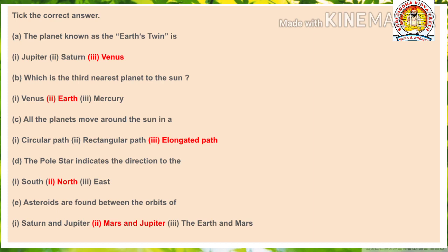Fill in the blanks: The planet known as Earth's twin is Venus. The third nearest planet to the Sun is Earth. All the planets move around the Sun in an elongated path. The polar star indicates the direction to the North. Asteroids are found between the orbits of Mars and Jupiter.